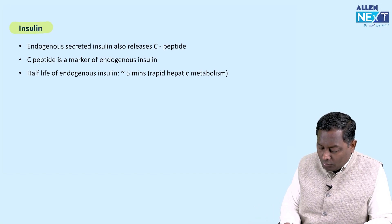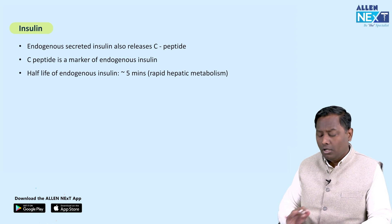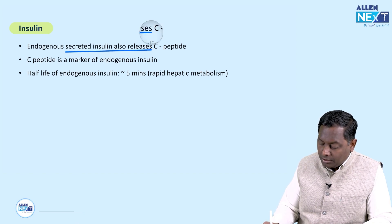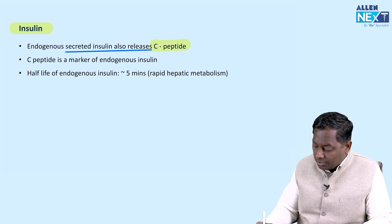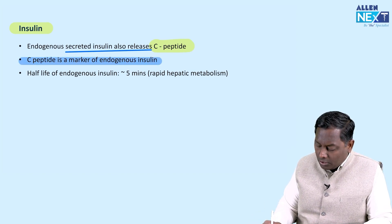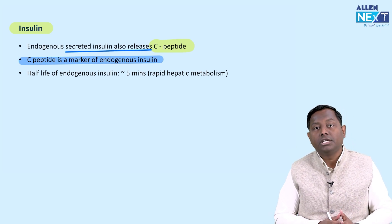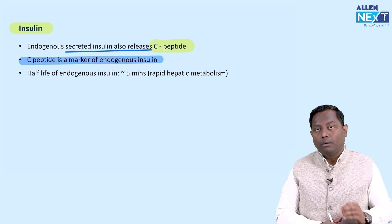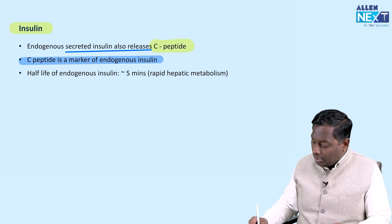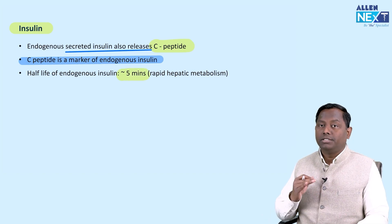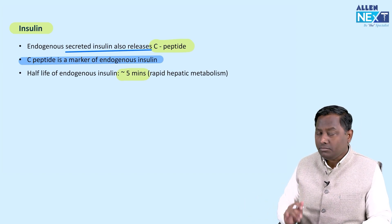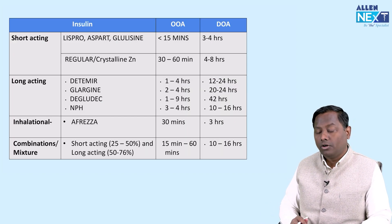Insulin is one of the very important topics and one to two questions are frequently repeated every alternate year from the insulin chapter. The first key point: endogenous insulin is secreted along with C-peptide. To check how much insulin is released, you measure C-peptide — it is the endogenous marker of insulin release. We can't just check insulin levels directly because the endogenous half-life of insulin is very short, around five minutes, as it is rapidly metabolized by liver enzymes.